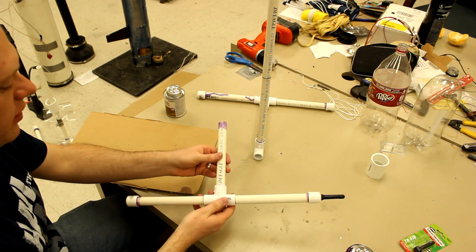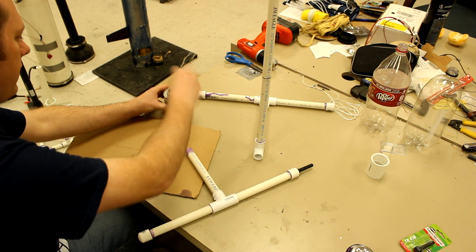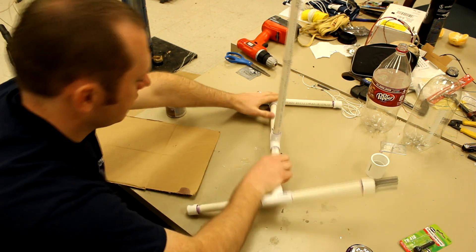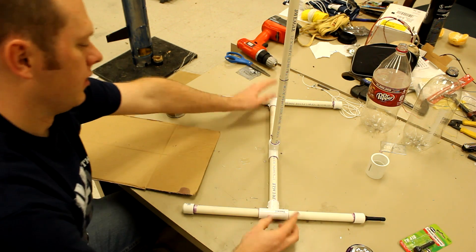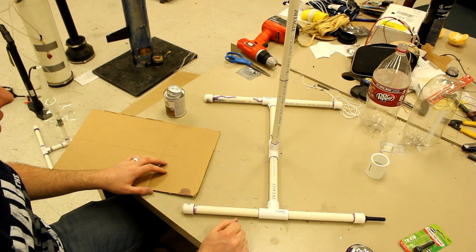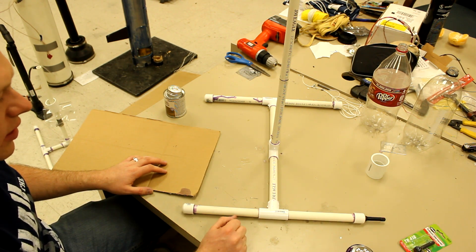It really doesn't matter at this point. Now you want to do this on a flat surface so that your two tees are nice and flat and square. Give that an extra minute to dry while we move on to some of the other steps.